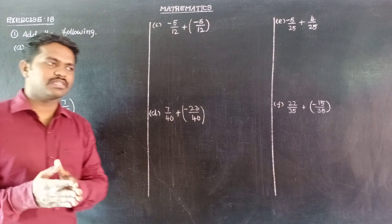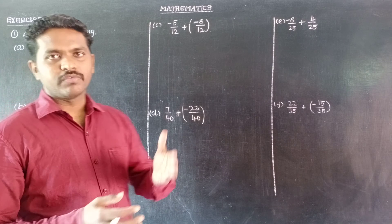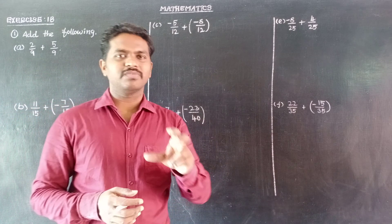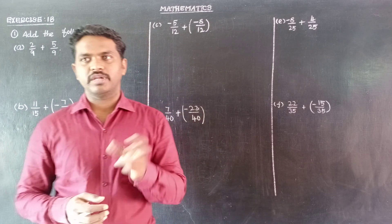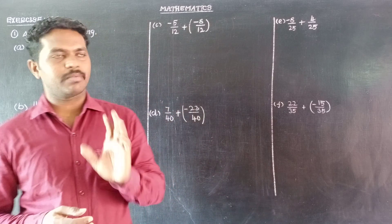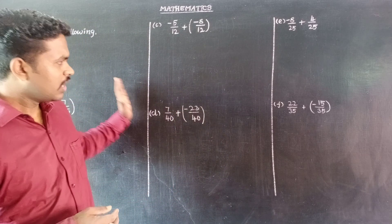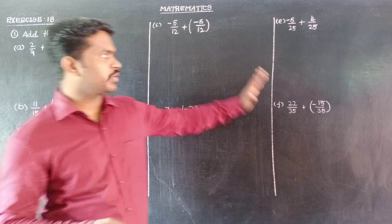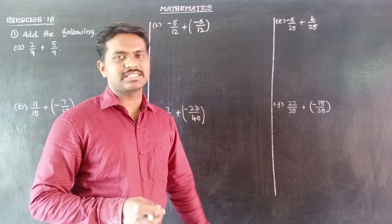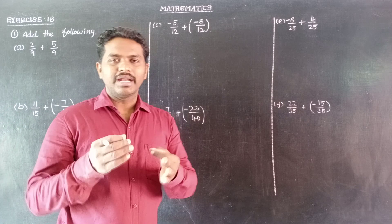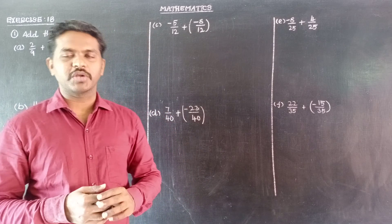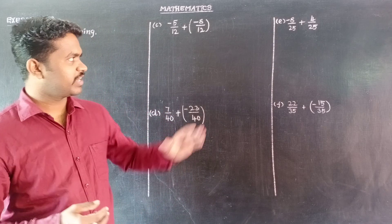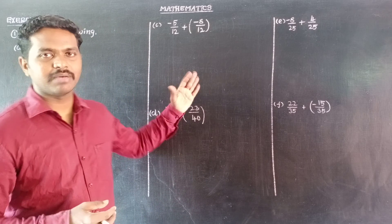If the denominators are different, first step: make the denominator the same. So control the denominator as same. But now in all the sums here, the denominator is same, so we can add the numbers directly.